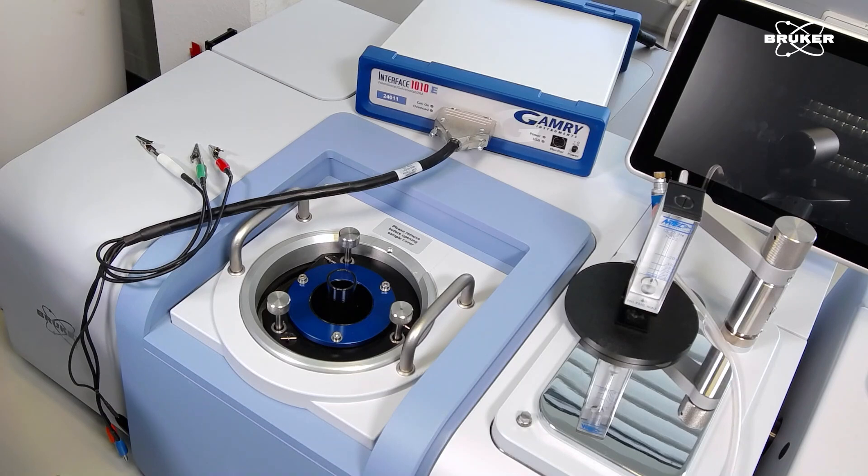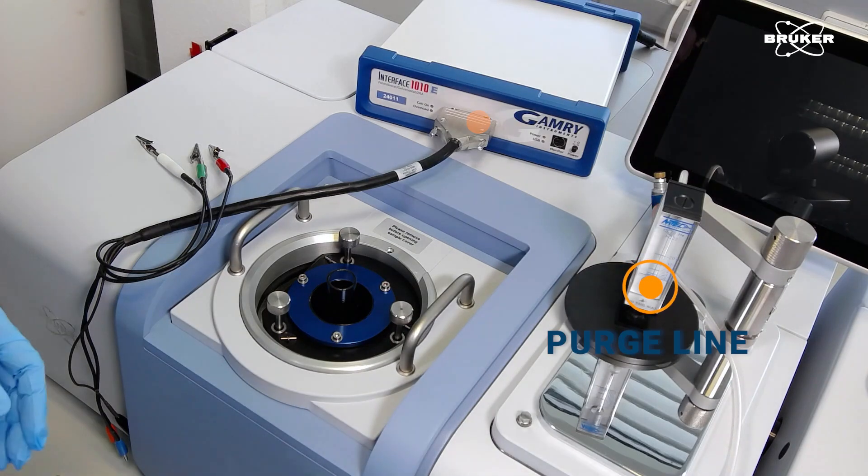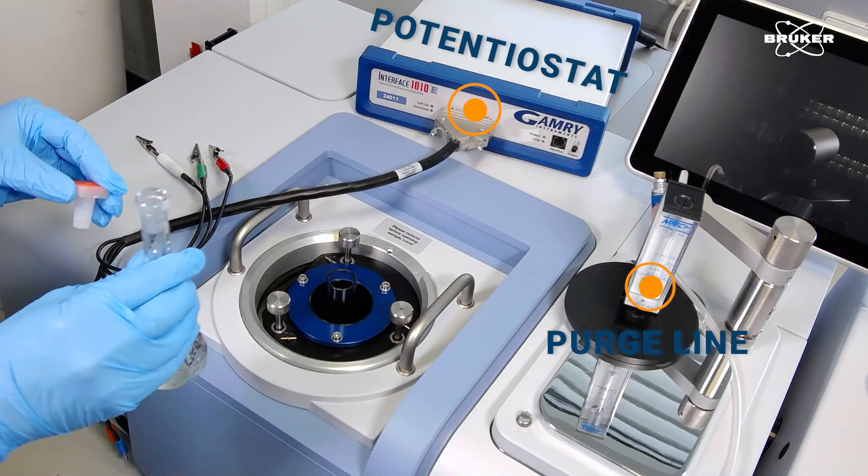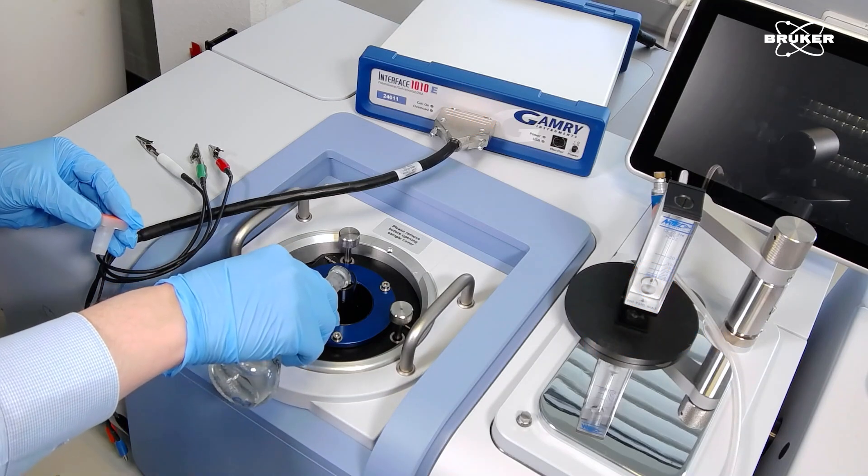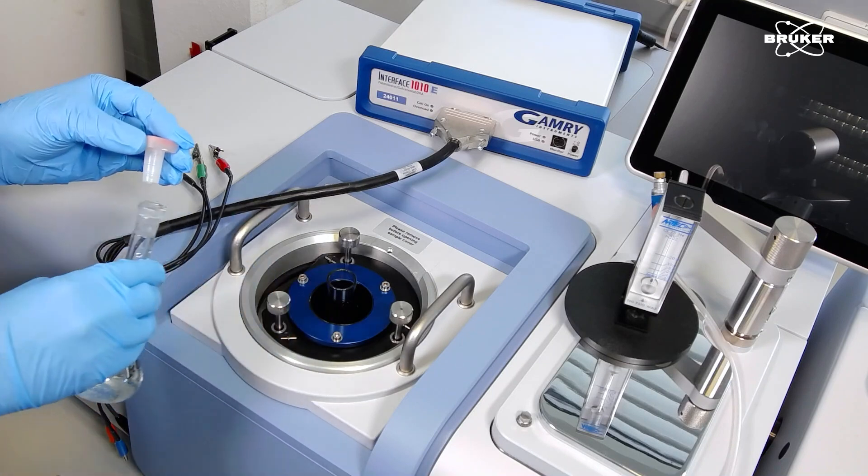Here is a top view of the setup, including the purge line and the potentiostat. To prepare for the experiment, fill the electrochemical cell with the analyte, in our case, ferrocyanide.